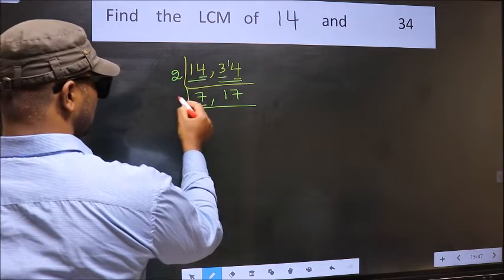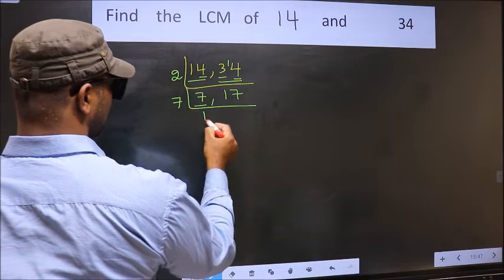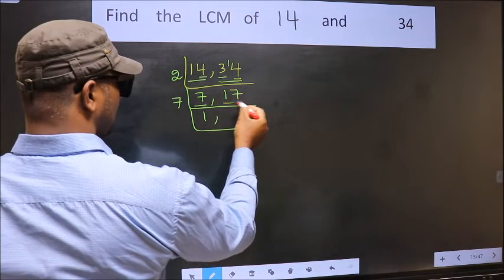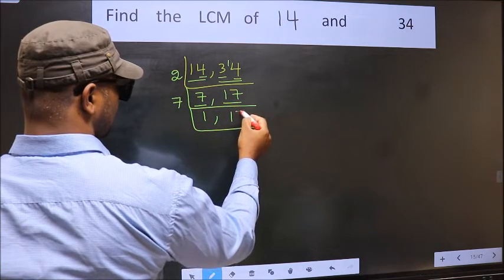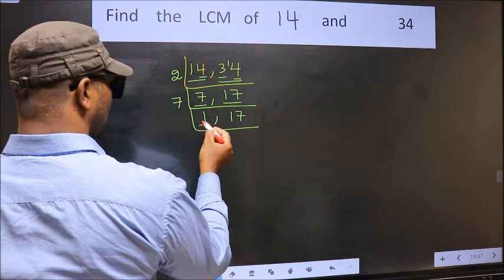Now, here we have 7. 7 is a prime number, so 7 1's 7. The other number 17, not divisible by 7, so we write it down as it is. We got 1 here.